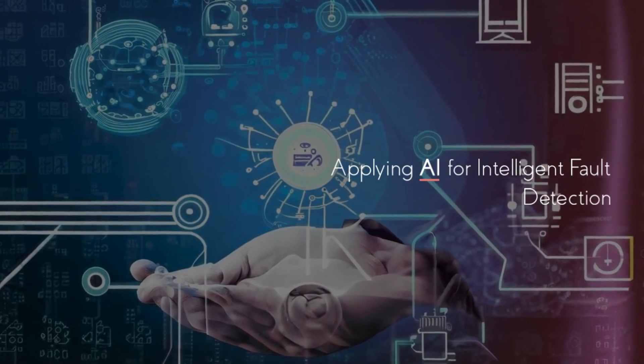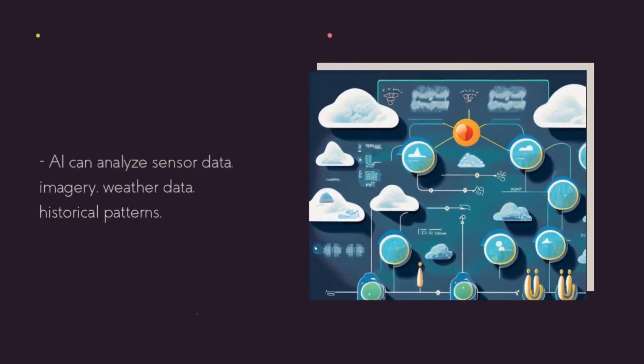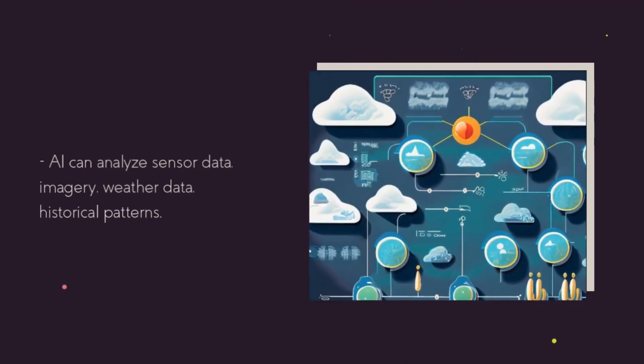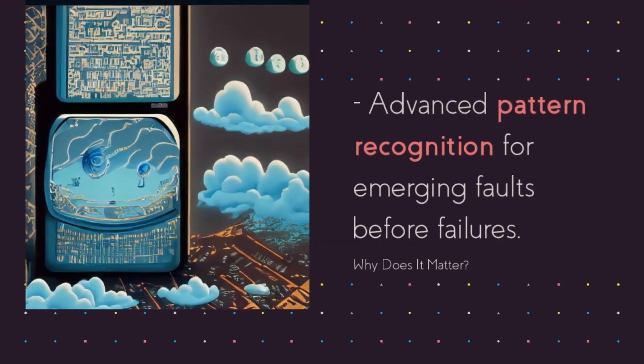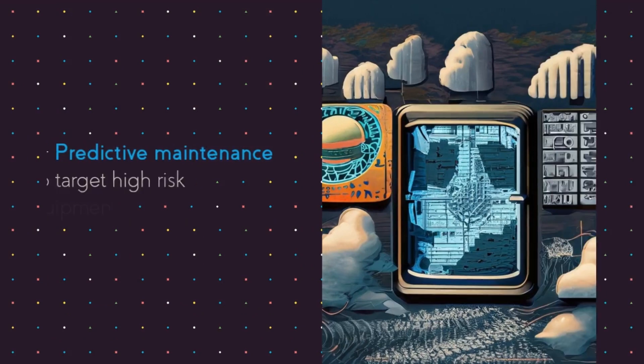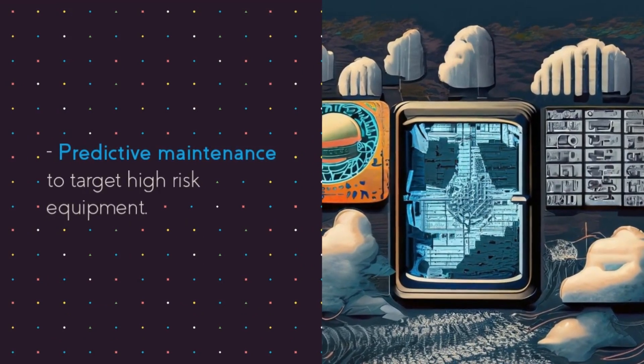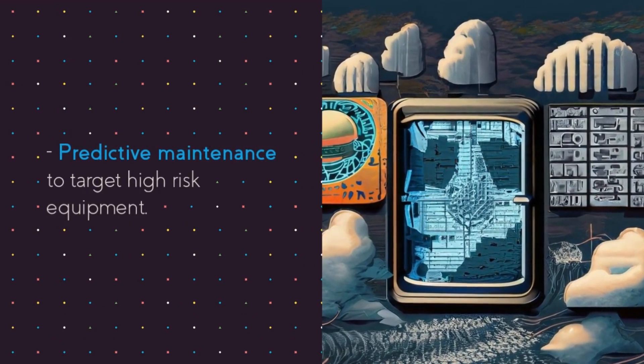With AI, we can analyze data from sensors, images, weather forecasts, and equipment history to spot patterns showing a fault could happen soon. This lets us get ahead of issues before they cause a failure. We can also better plan maintenance on high-risk equipment.